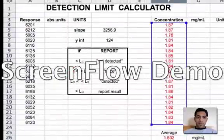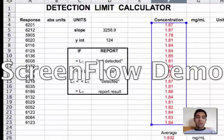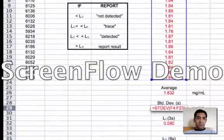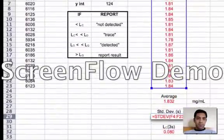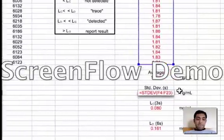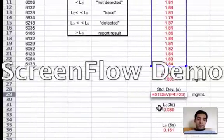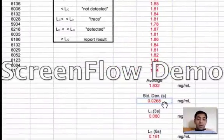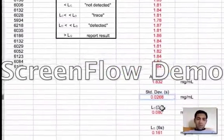Now in this particular formula bar you can see you have calculated the standard deviation using the formula STDEV into bracket F4 colon F23, so that you get the standard deviation of this particular lot and you have obtained the standard deviation values.